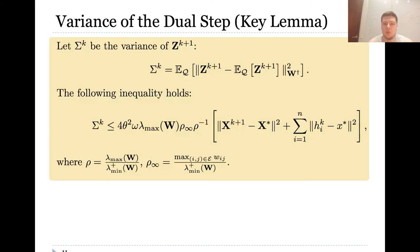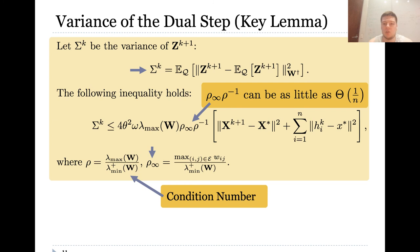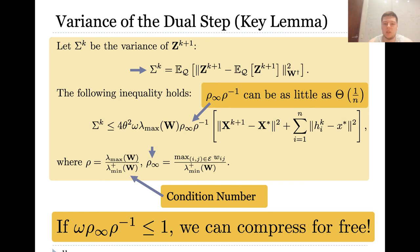This is a key lemma which establishes an upper bound on the variance of the dual step. Rho is the condition number of the matrix W and rho infinity is another factor which is less than rho. One can show that rho infinity divided by rho can be as little as 1 over n. This lemma implies that if omega times rho infinity divided by rho is less than 1, then we can perform compression for free.